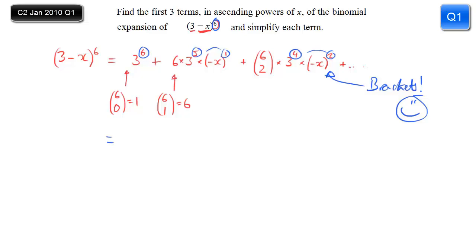All we need to do now is tidy it up. 3 to the power of 6, my calculator tells me, is 729. Then I look at the sign — I've got a minus x there, so my next term is going to be negative. 6 times 3 to the power of 5: do that in the calculator and you get 1,458. And that is times x.